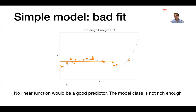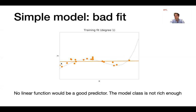If we take d=1 and restrict ourselves to linear functions, no linear function will be a good predictor because the ground truth is non-linear — it cannot be represented by a linear function. So simple models give a bad fit on the data and will not predict well the ground truth.